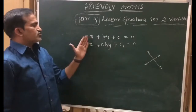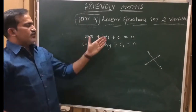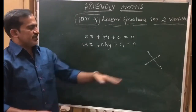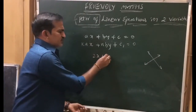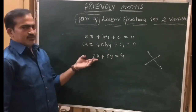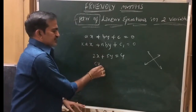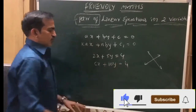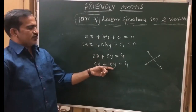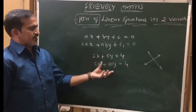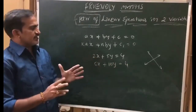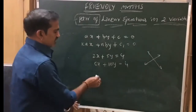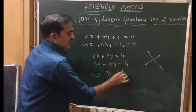When the x coefficient of one equation is multiplied by one numerical value and the y coefficient is multiplied by another numerical value, those two pairs of linear equations are said to be intersecting lines. For example, take 2x plus 5y is equal to 4. Multiply the x coefficient by 3 to get 6x, and the y coefficient by 2 to get 10y. Then a1 by a2 is 1 by 3 and b1 by b2 is 5 by 10 which is 1 by 2. These two are not equal, so these are intersecting lines.